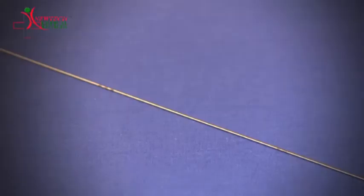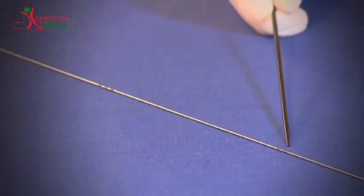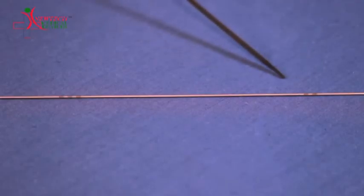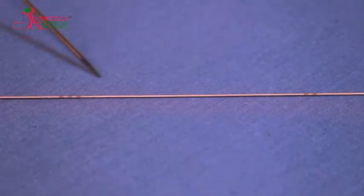In uncoated guide wire, we provide centimeter marking at a distance of 10 centimeters. Its core can be made up of stainless steel or nitinol.